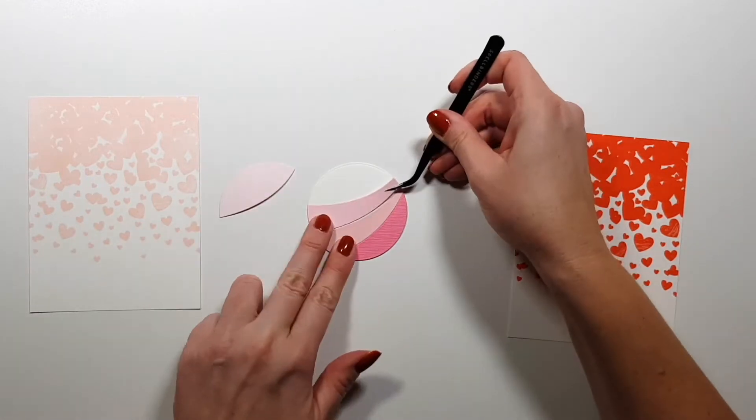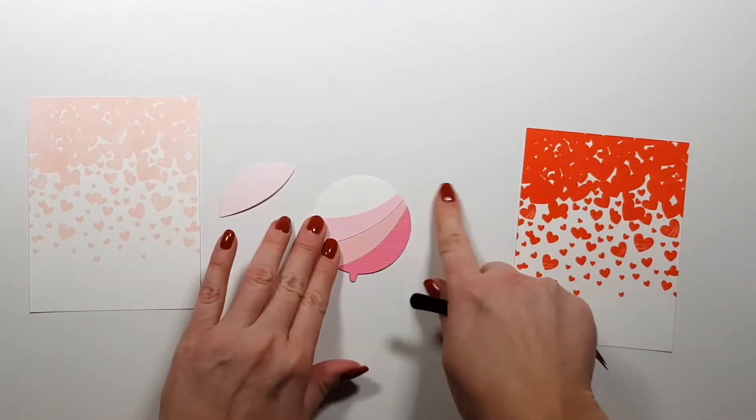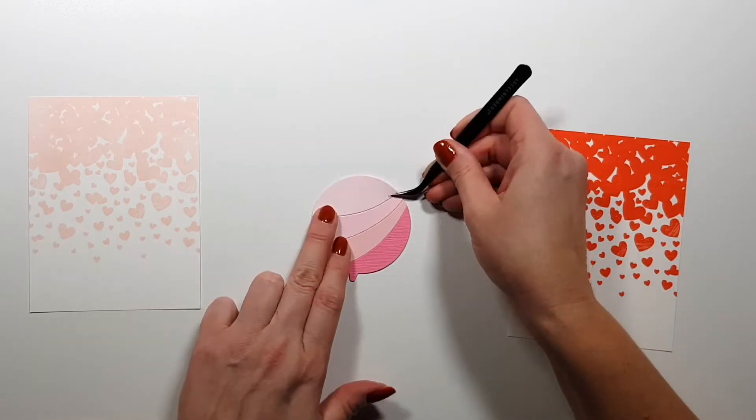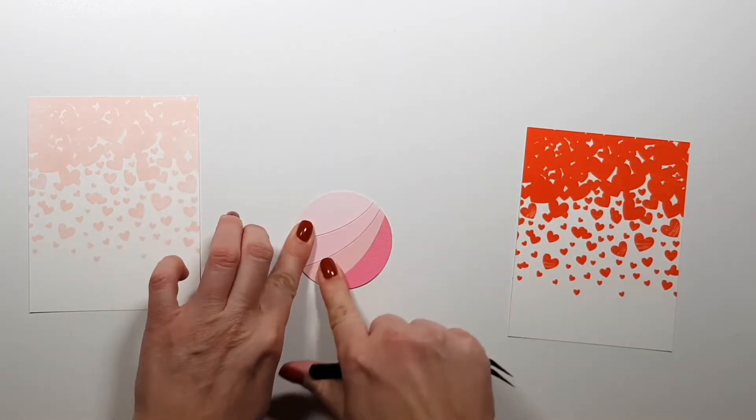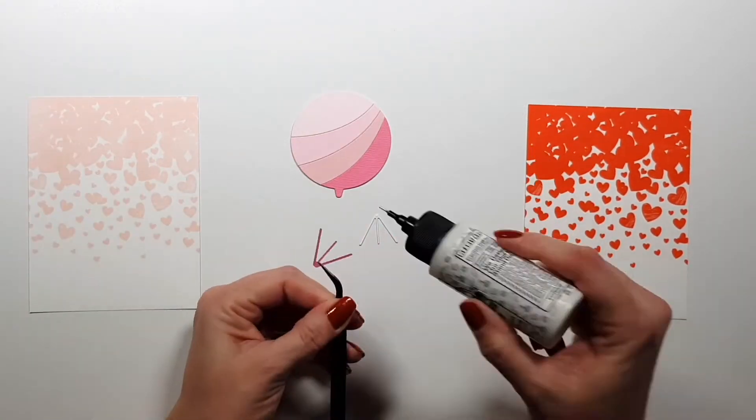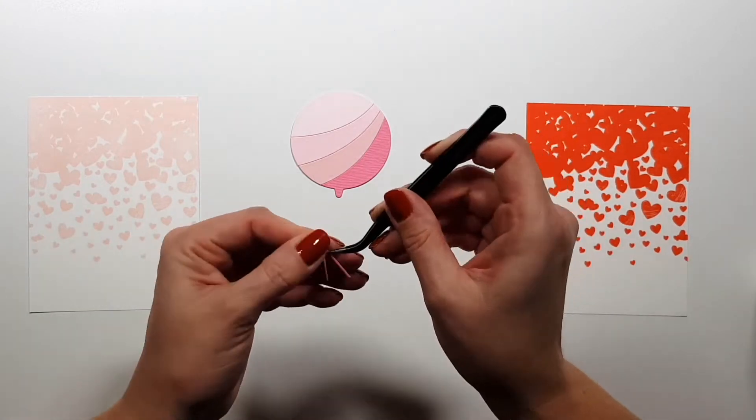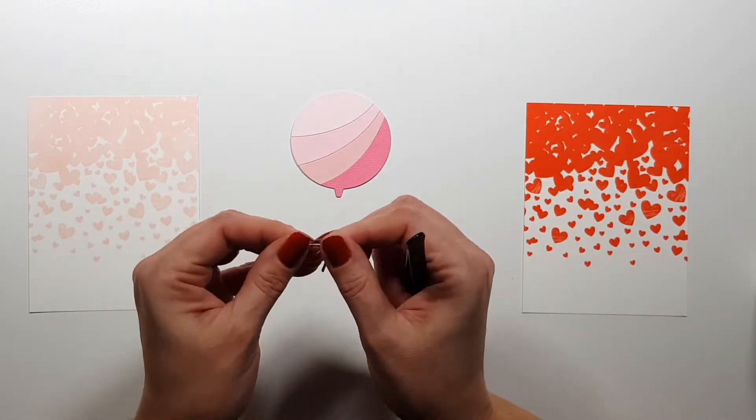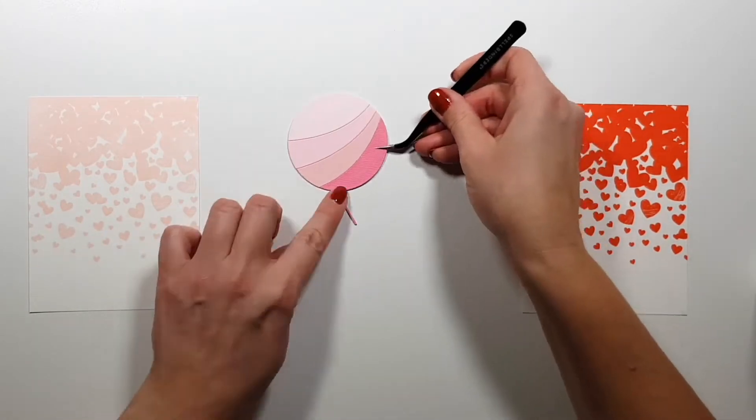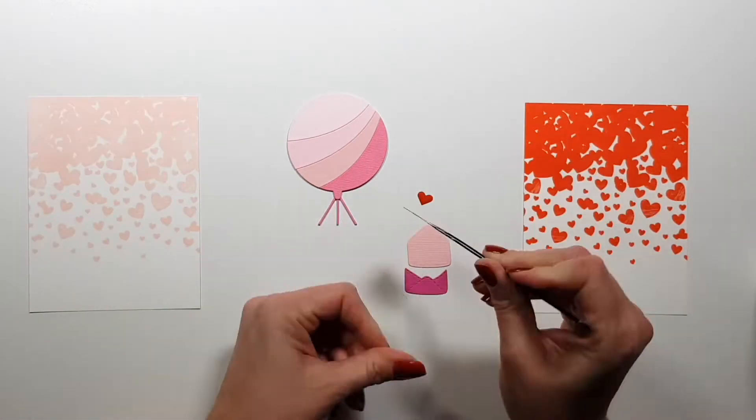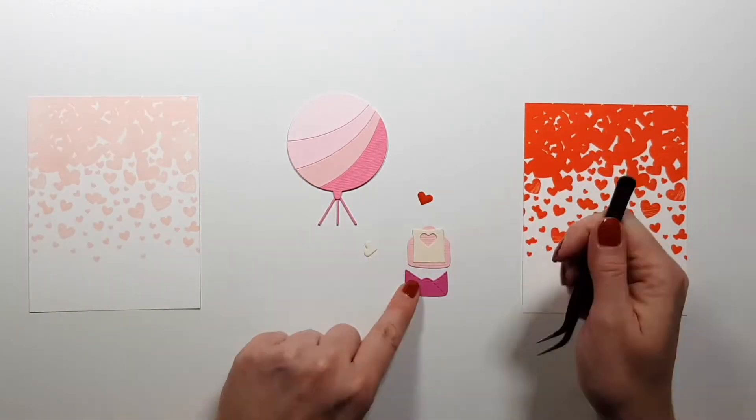I already did the die cutting off camera. As you can see, the balloon - you can just use a single color or you can use four colors. You can layer this on the background that is also a separate die, so it's easy to assemble.